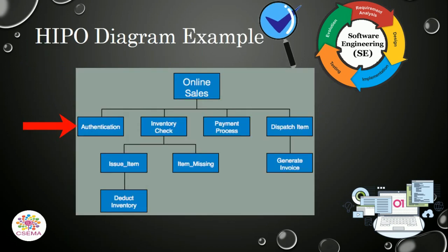Here is an example of the HIPO diagram — the first one is the Online Sales Module with its functions, and all these functions are decomposed into sub-functions. We are going to create an IPO diagram for the Authentication Support module.